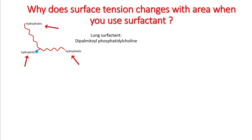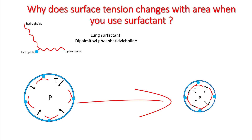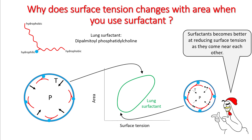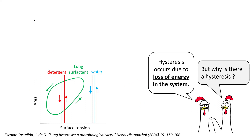Surface tension changes with area because lung surfactant has hydrophobic and hydrophilic ends. As the volume inside the alveolus drops, surfactants cluster together and repel more, becoming better at reducing surface tension when closer to each other. That is why surface tension decreases with area. However, hysteresis is more complicated and has additional underlying reasons.